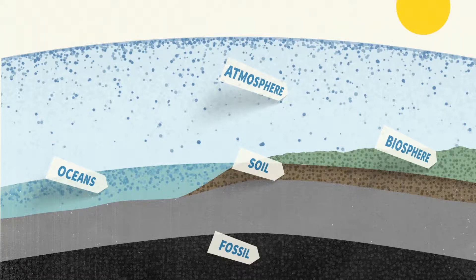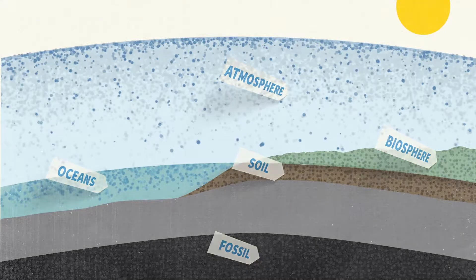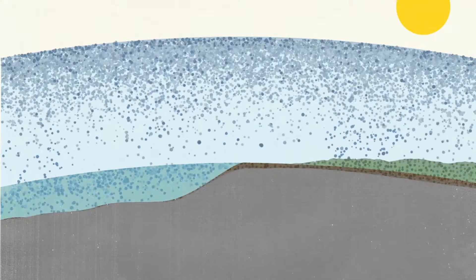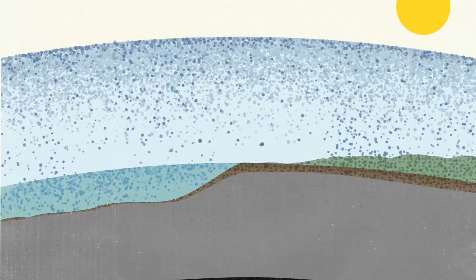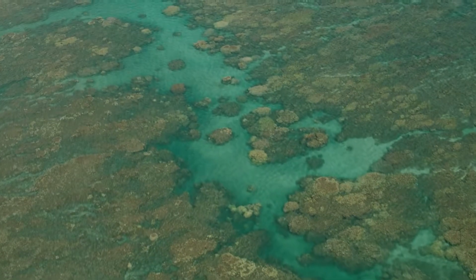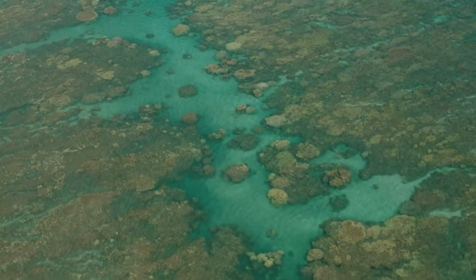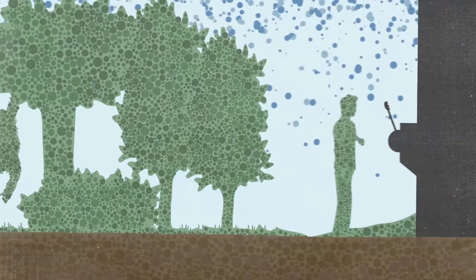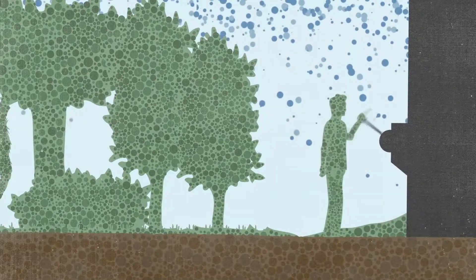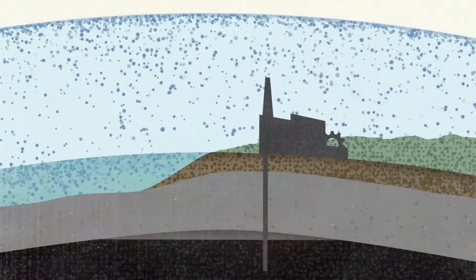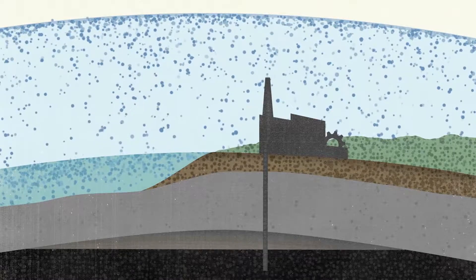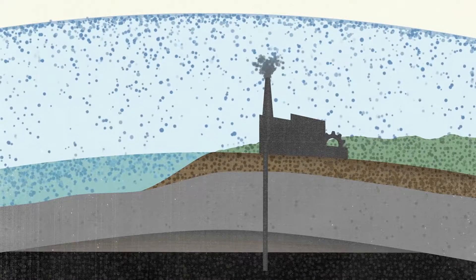Starting about 500 million years ago, when plants appeared on the planet, carbon began to cycle. This allowed for life to evolve as we know it — life that thrives in an oxygen-rich environment. Humans figured out how to pull carbon from deep within the earth, where the natural cycles have contained it for millions of years, in the fossil deposits.